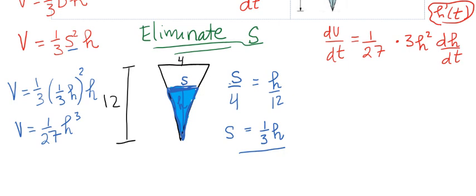So we have 2/3 is equal to 1 over 27 times 3h. We were told earlier h is equal to 2 at the moment, and dh/dt is what we're looking for. So let's move some things around or let's do some simplifying.